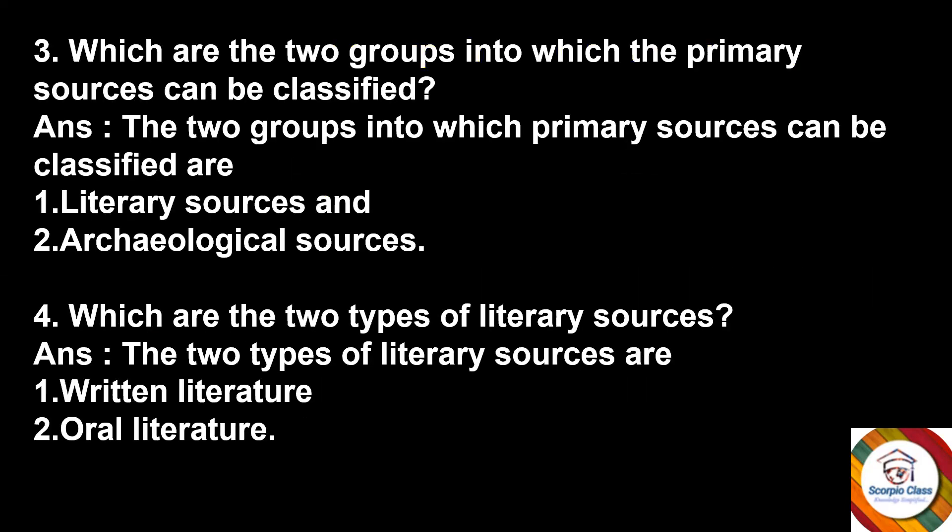Next question: Which are the two groups into which the primary sources can be classified? Answer: The two groups into which primary sources can be classified are literary sources and archaeological sources. Next question: Which are the two types of literary sources? Answer: The two types of literary sources are written literature and oral literature.